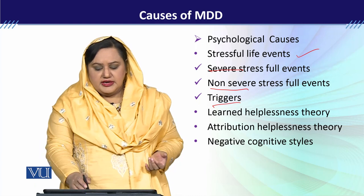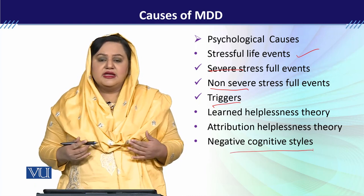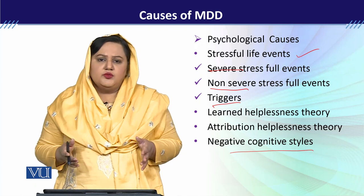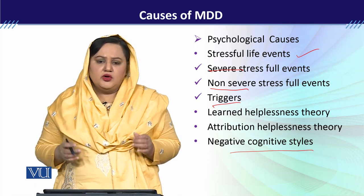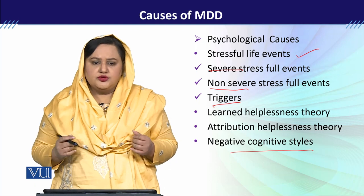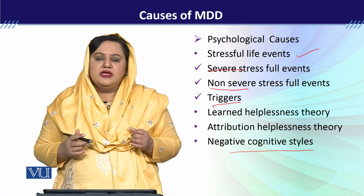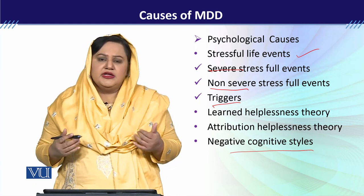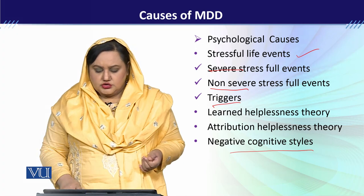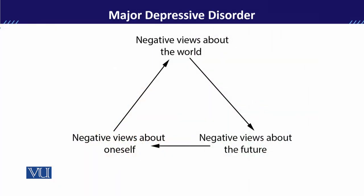Then we will talk about Negative Cognitive Styles, which was basically proposed by Beck. He said that people who have depression have automatic negative thought processing in their mind. Because of this negative thought processing, there are three things associated with it.